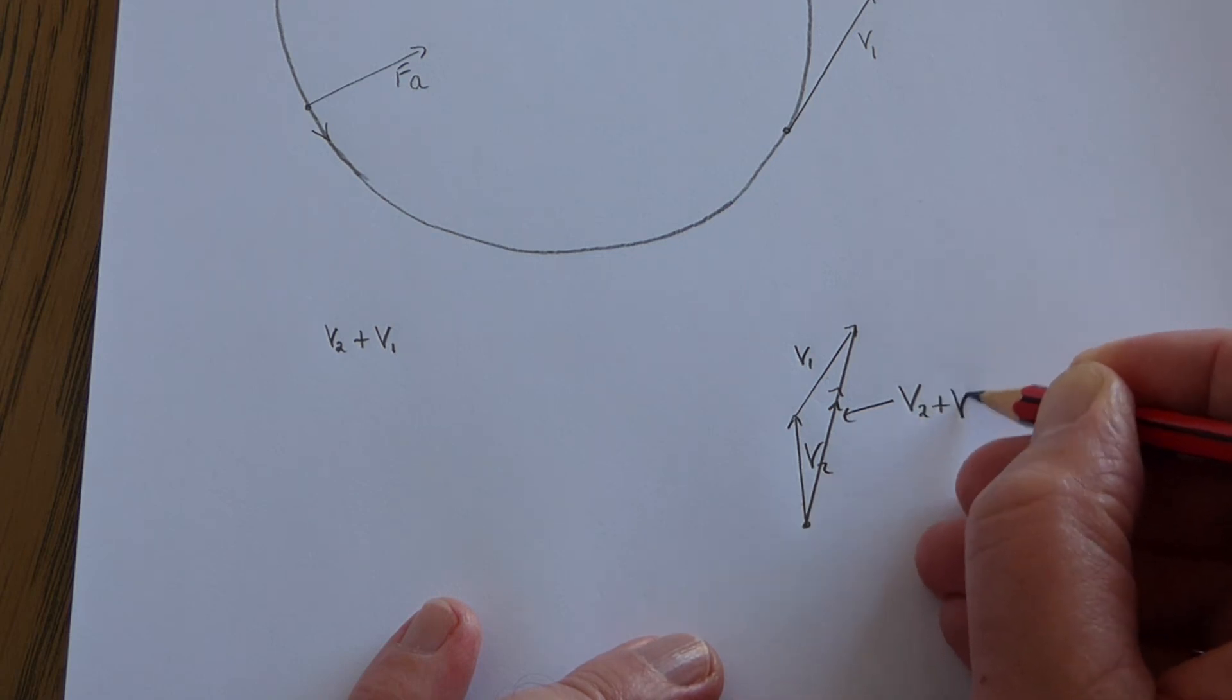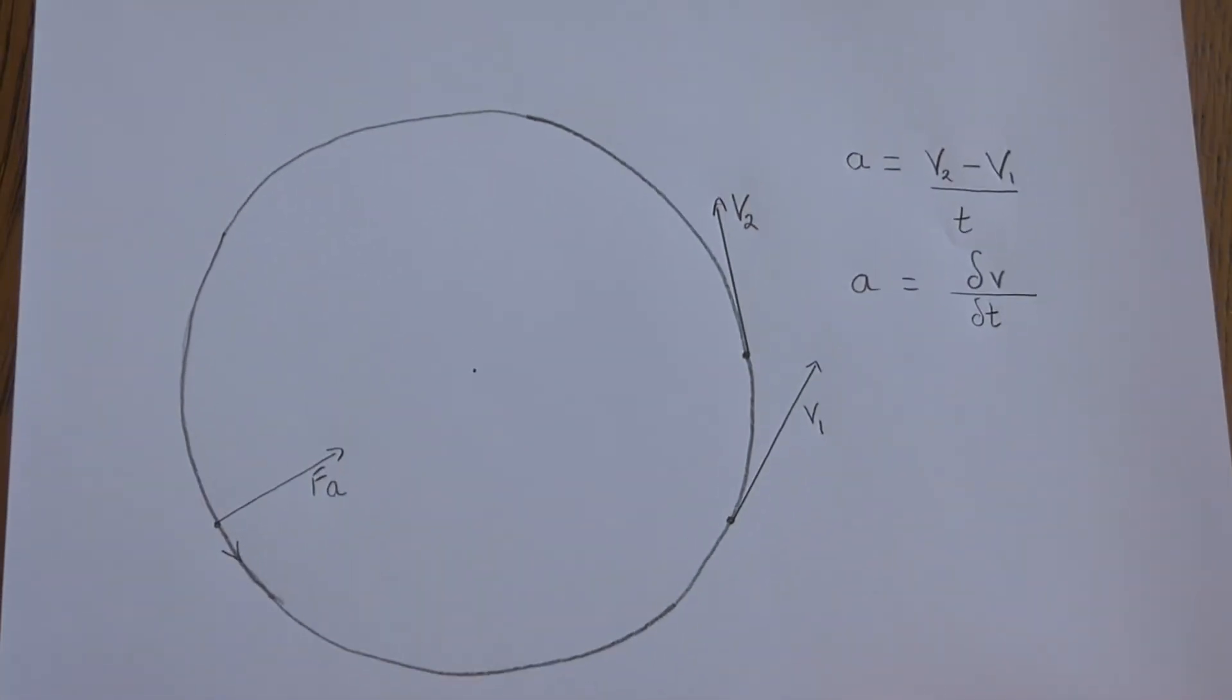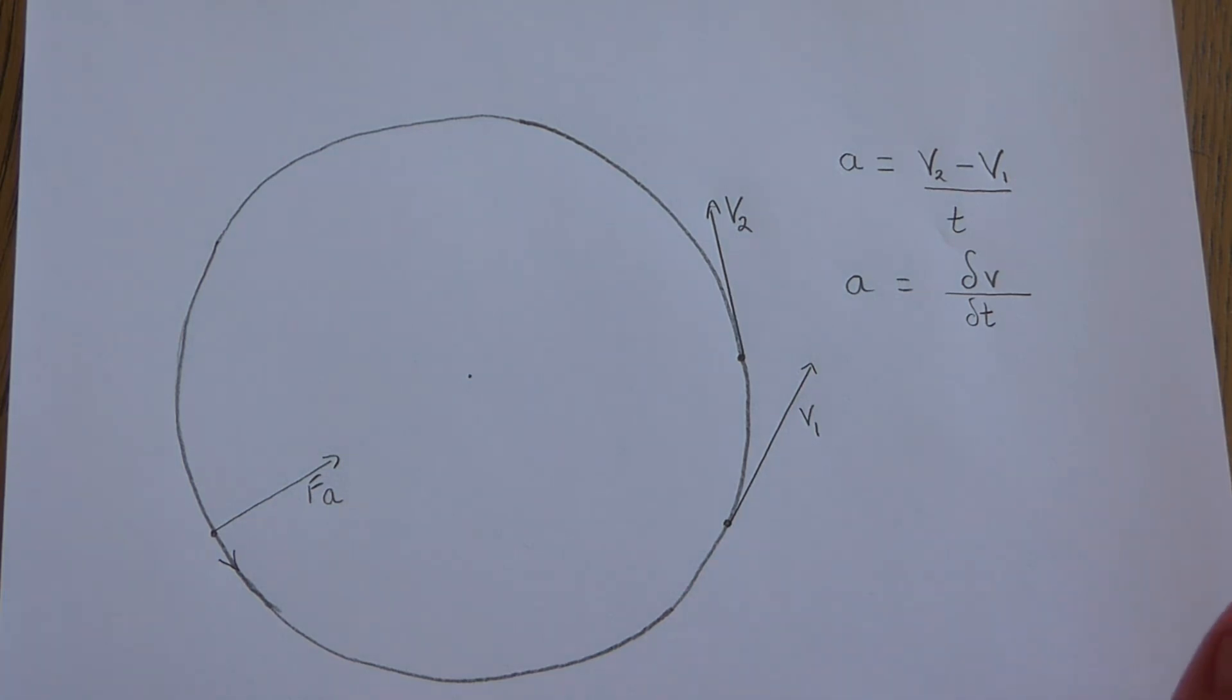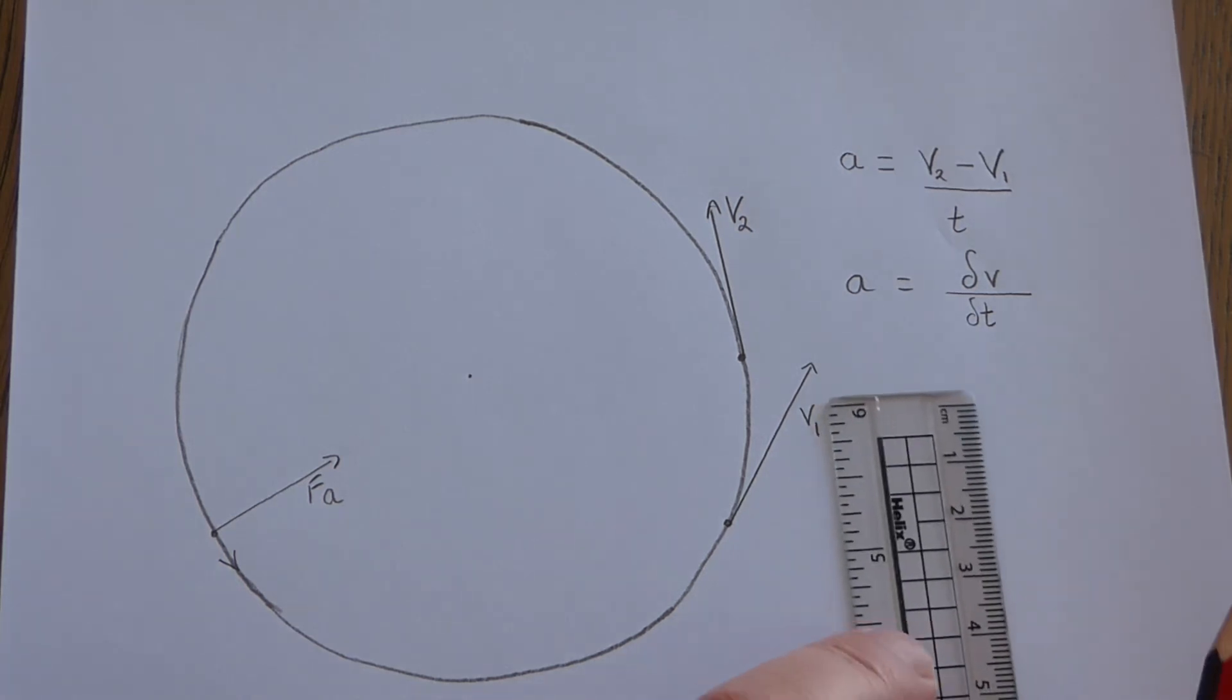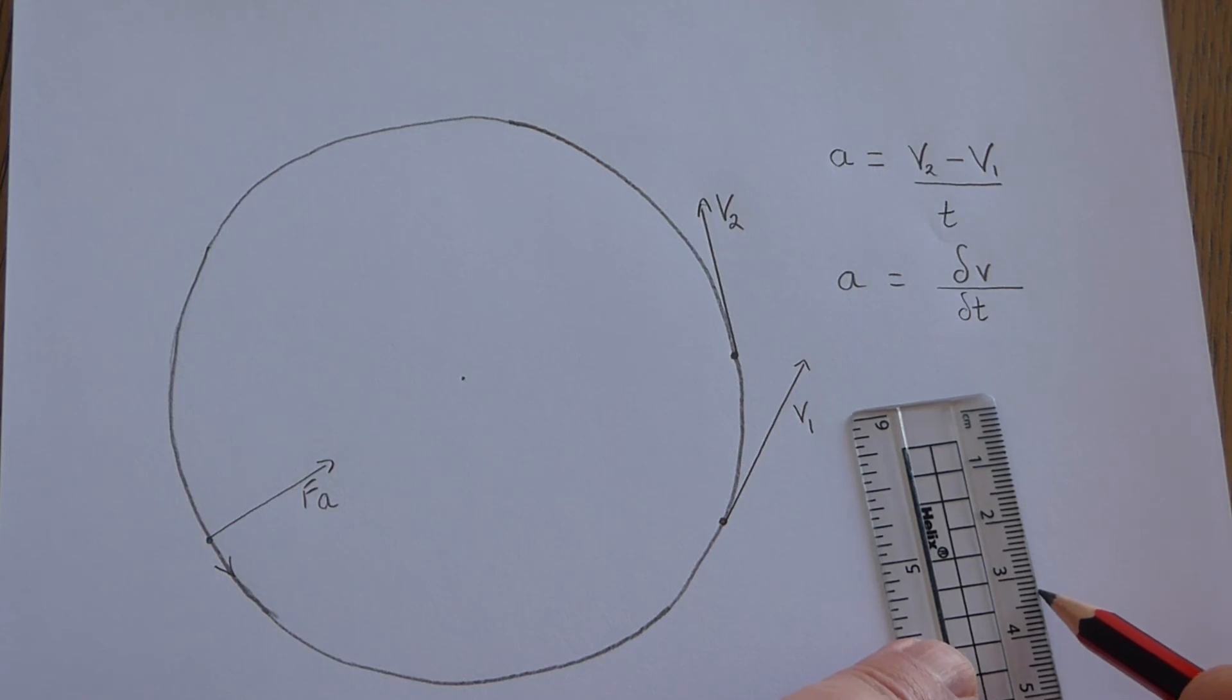Now we don't want that. What we want is v2 minus v1. Let's do the negative version of v1. We'll draw v2 as before, heading up in this direction. That would be the positive version of v2.